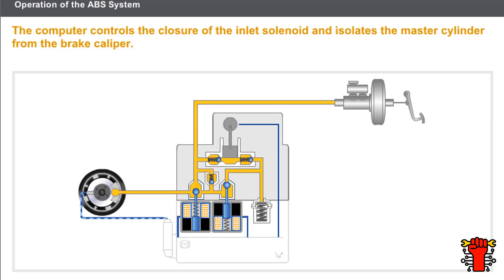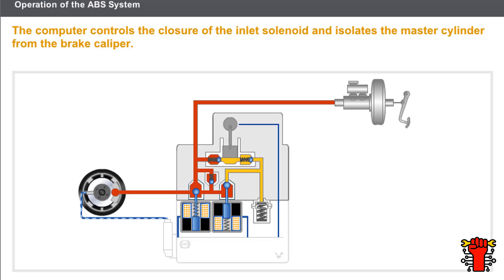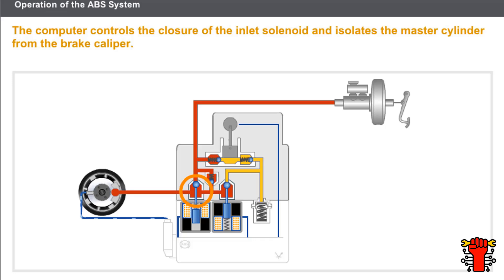Now let's look at the maintained pressure phase. The pressure in the circuit increases, and wheel slip has a tendency to exceed the 20% threshold. The computer controls the closure of the inlet solenoid and isolates the master cylinder from the brake caliper, making an increase in braking pressure for this wheel impossible.